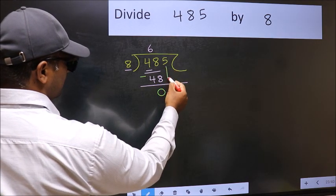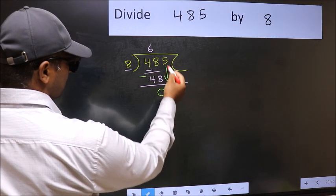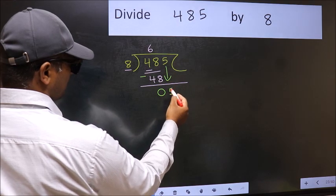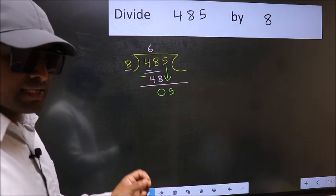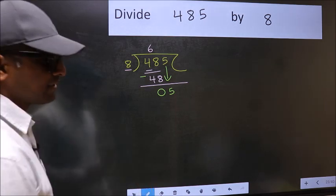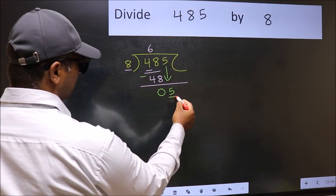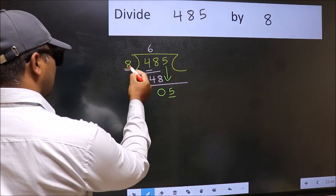After this, bring down the beside number. So 5 down. After this step, the mistake happens. And the mistake is this. Here we have 5 and here 8.